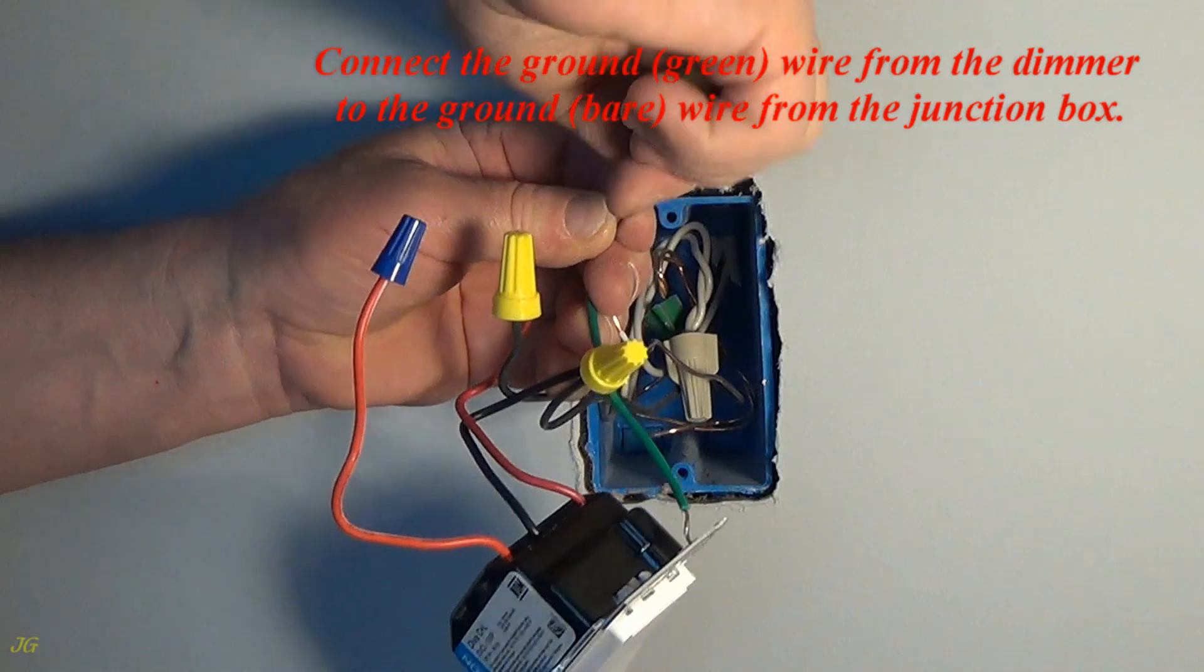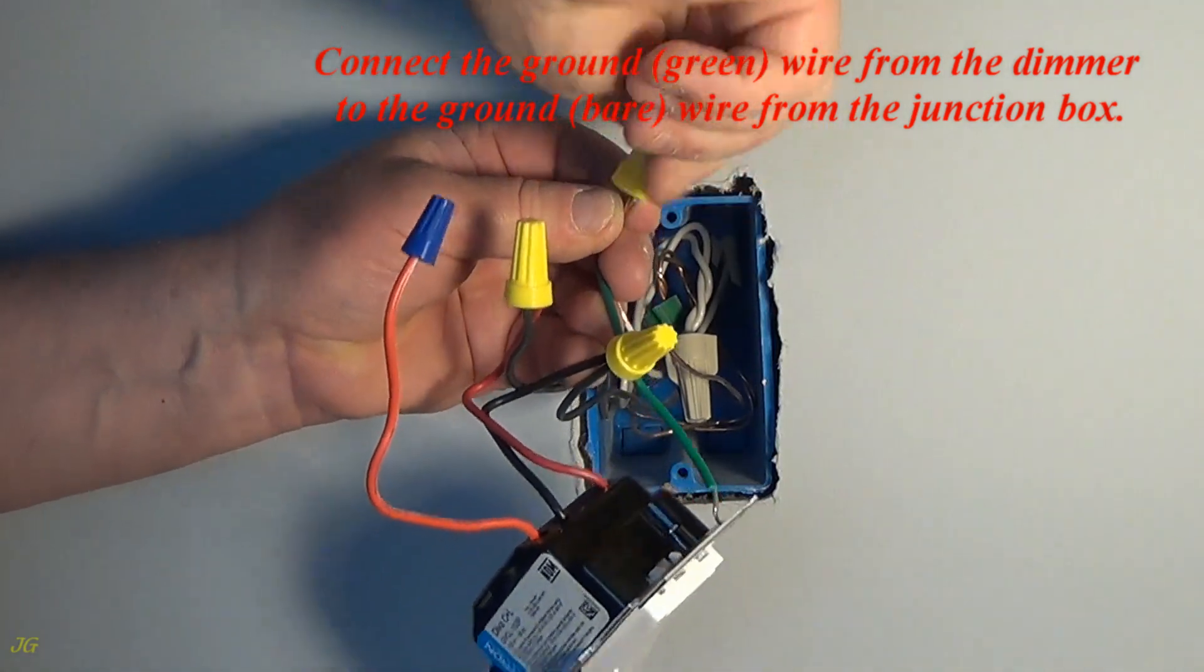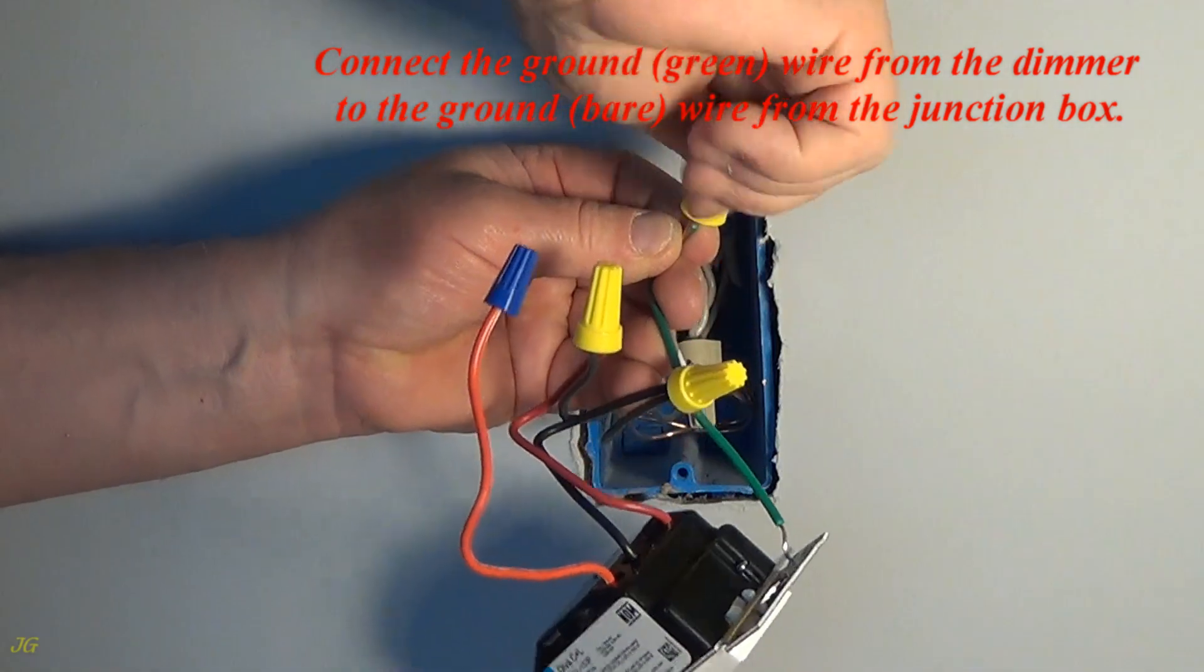Connect the ground (green) wire from the dimmer to the ground (bare) wire from the junction box.